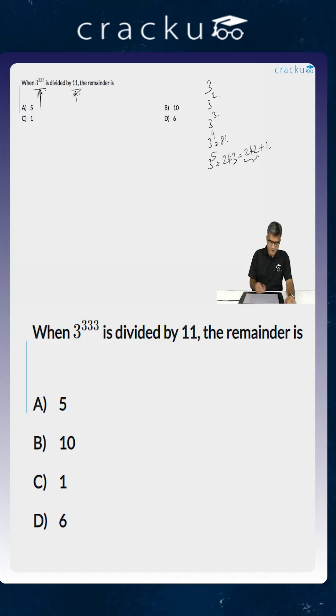So now we will express 3 to the power 333 as 3 to the power 330 into 3 to the power 3. The reason for that is because 3 to the power 330 can be extended from 3 to the power 5. This is basically 3 to the power 5 whole to the power 66 into 3 cubed.